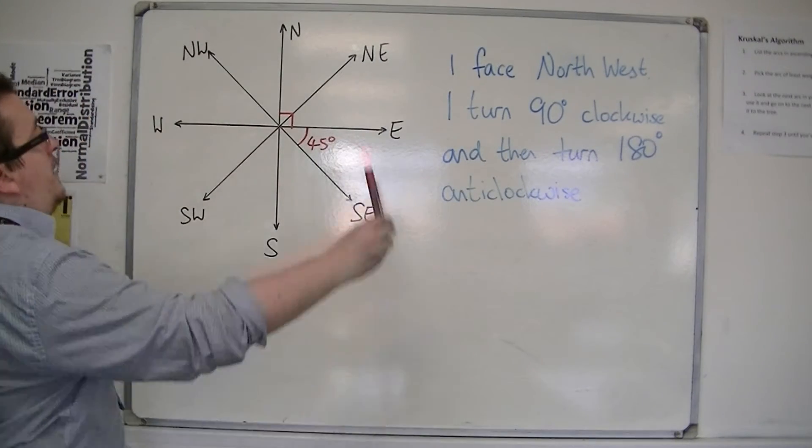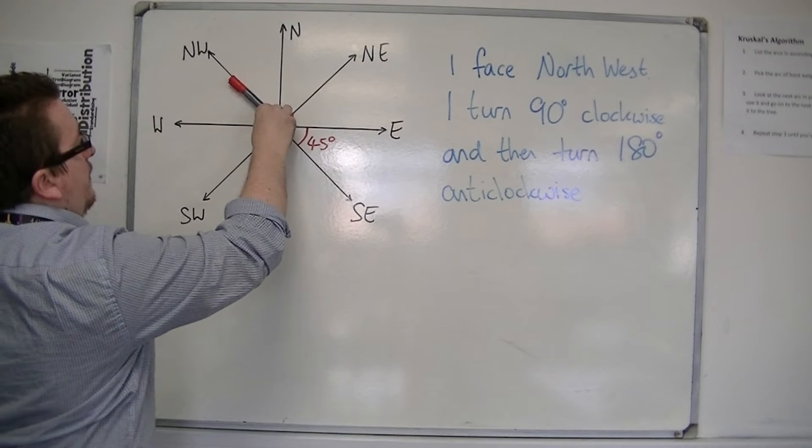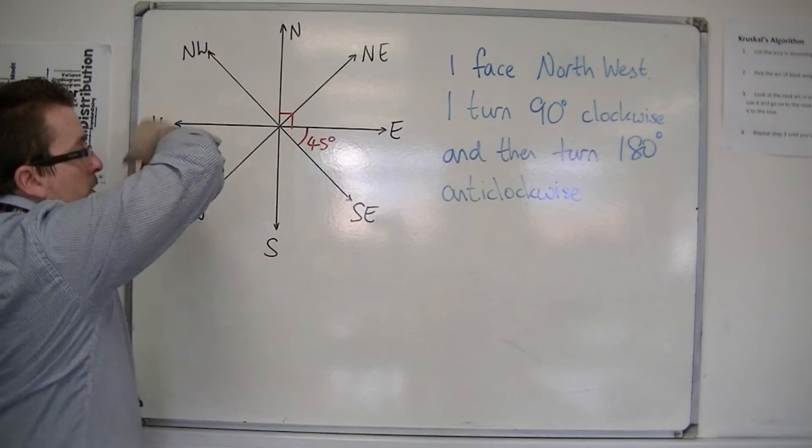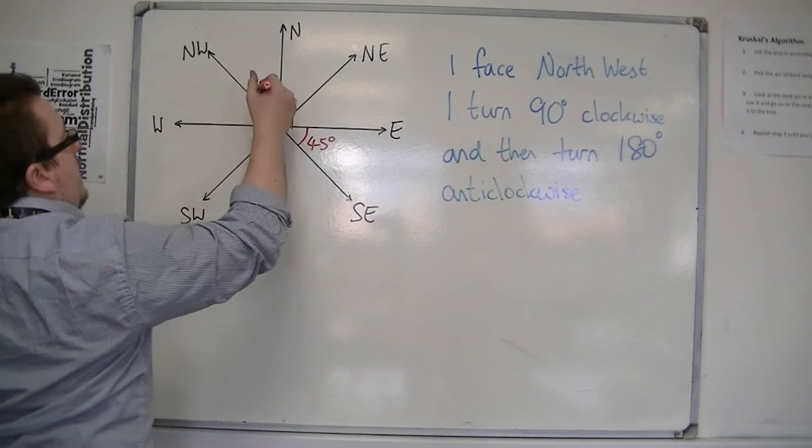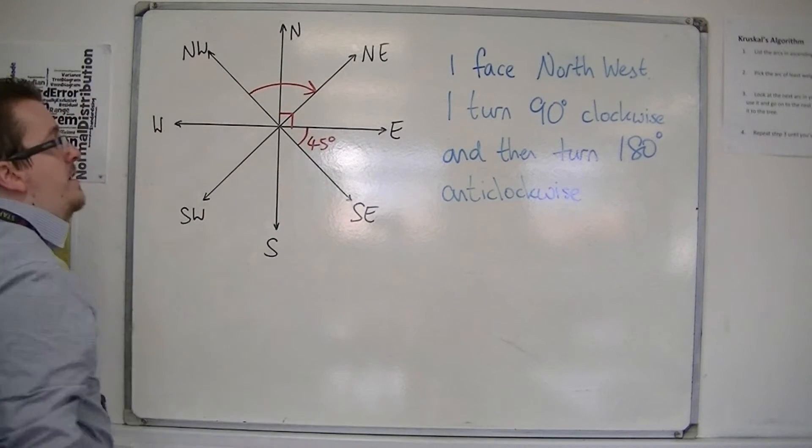So if I face north-west and I turn 90 degrees clockwise, then 90 degrees clockwise moves me to north-east. Clockwise is going round like a clock in this direction. So I have moved from north-west to north-east by 90 degrees.